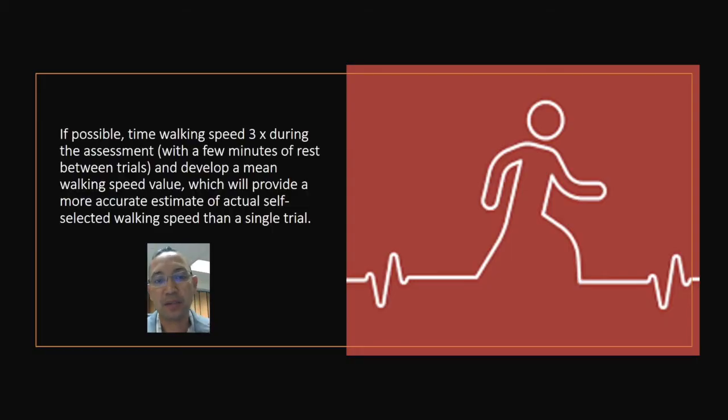If possible, time the walking speed three times during the assessment and develop a mean walking speed value, which will provide a more accurate estimate of actual self-selected walking speed than a single trial.